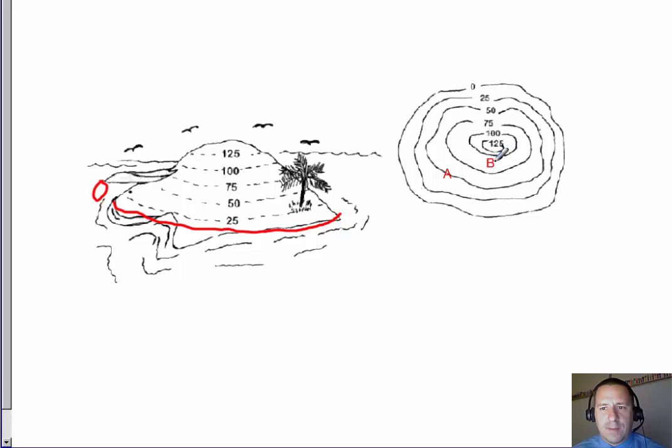Now what is the elevation at point B? That's going to be a little bit more complicated, because at point B it's in between 75 and 100. So the best that we can say is that the elevation at point B is going to be somewhere between 75 and 100. We can't be exactly sure, we just know that it's between those. But point A, because it's on that line, has an elevation of 50 feet.